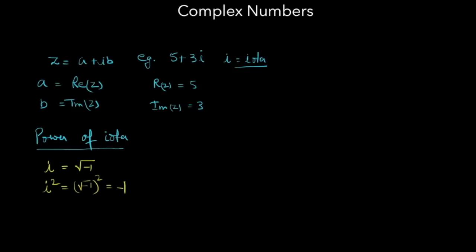iota square is minus 1 and iota cube is iota square into iota. iota square is minus 1 into iota is minus iota. iota cube is minus iota. iota to the 4th is iota square into iota square.